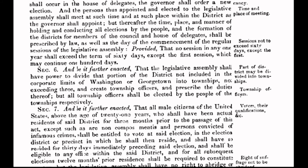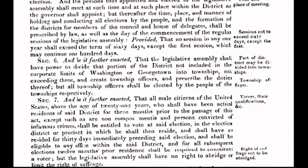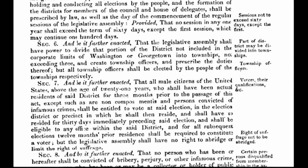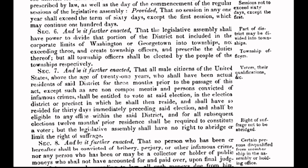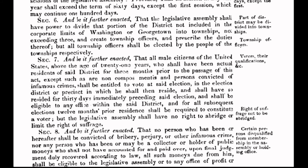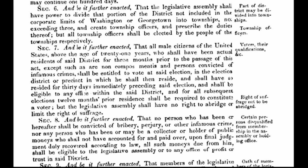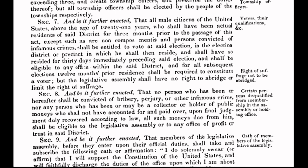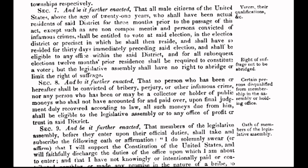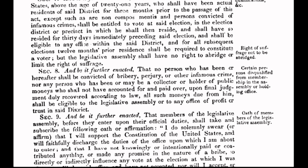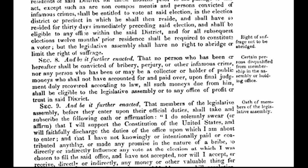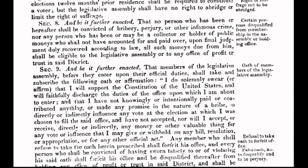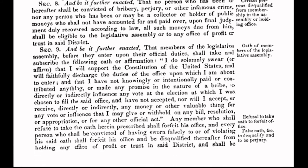Roman civil law was fully established in the 13 colonies before our nation began and then became managed by private international law. In other words, the government created for the District of Columbia via the Act of 1871 operates solely on private international law, not common law, which was the foundation of our constitutional republic. And it is this fact that has impacted all Americans in concrete ways.